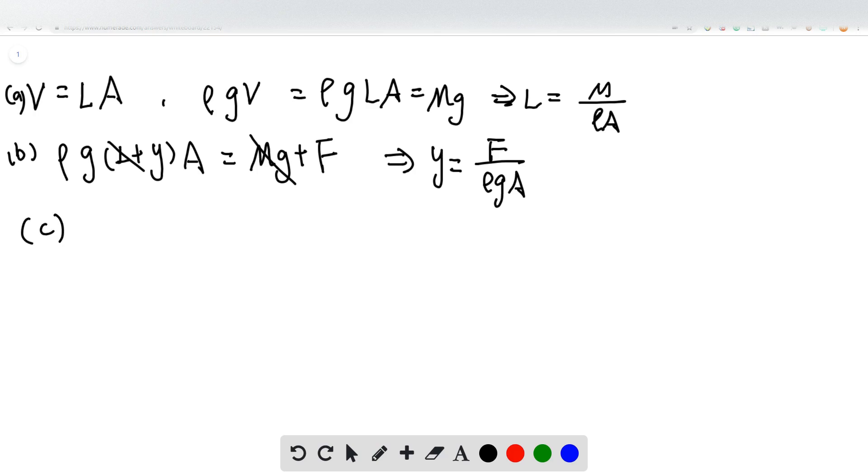So for question C, the net force can be equal to mg minus the buoyant force ρGA(Y+L). And since mg equal to ρGA times L from question A, so it's going to be negative ρGA Y.